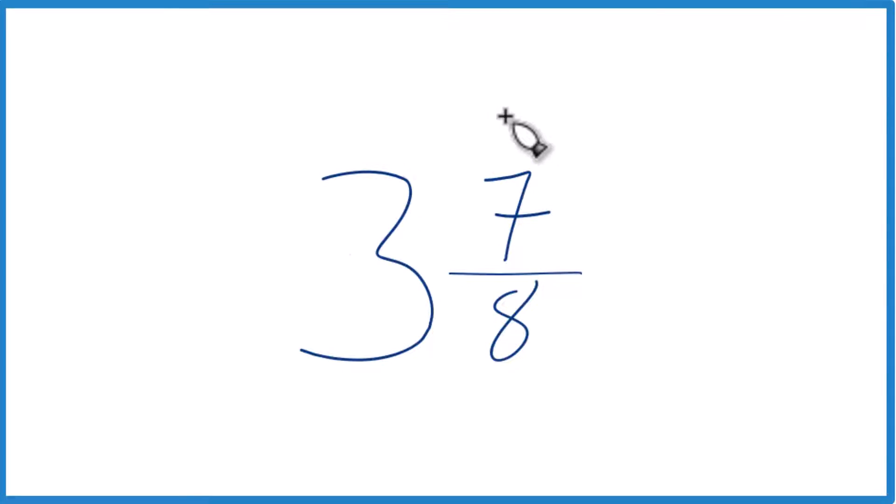If you're asked to write the mixed number 3 and 7 eighths as an improper fraction, here's how you do it.